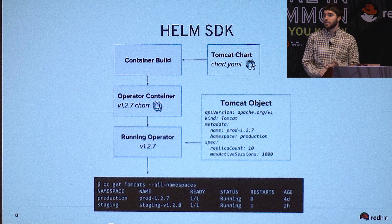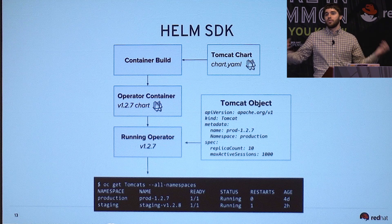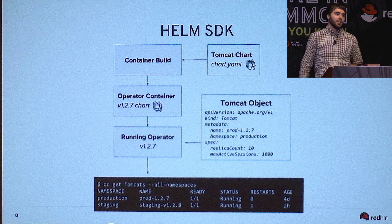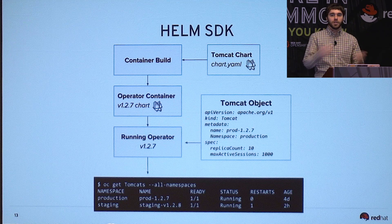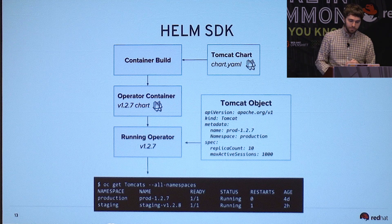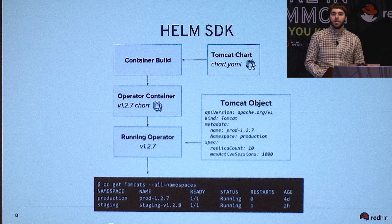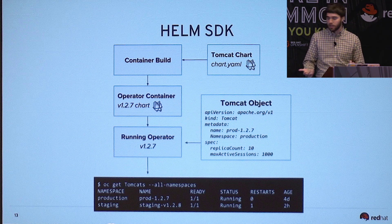You interact with it via a Tomcat object, where the spec field contains tunables like replica count and number of active sessions. You get a native Kubernetes experience — just `oc get tomcats` across all namespaces and you can see your production and staging instances on different versions, both ready. In your CI system, you're addressing this Tomcat object rather than a whole pile of Kubernetes manifests that might get out of sync. People reviewing PRs get a really nice, high-level config for the application. You can build this for anything — this is the beauty of the Kubernetes extension mechanism.